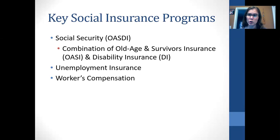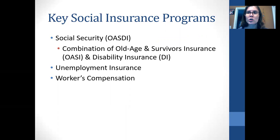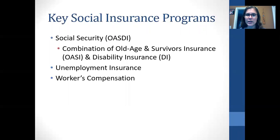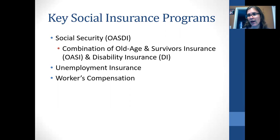The three main types of social insurance programs are: social security, unemployment insurance, and workers' compensation. All three programs share a goal of replacing a portion of lost earnings. So if you are unable to work because you retire, lose your job, or get hurt on the job, you would receive compensation from the government.